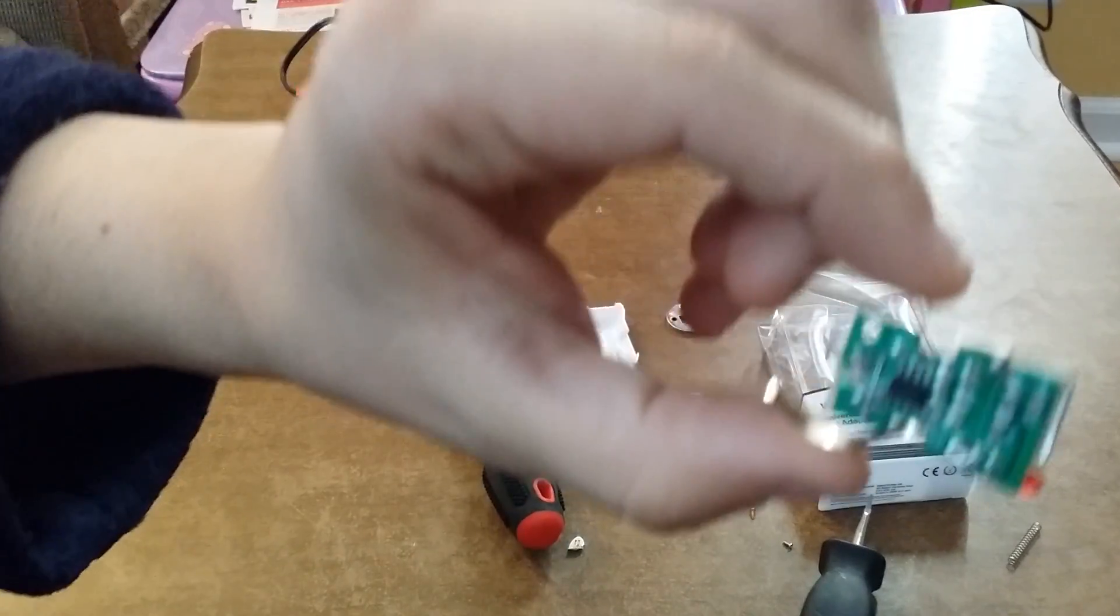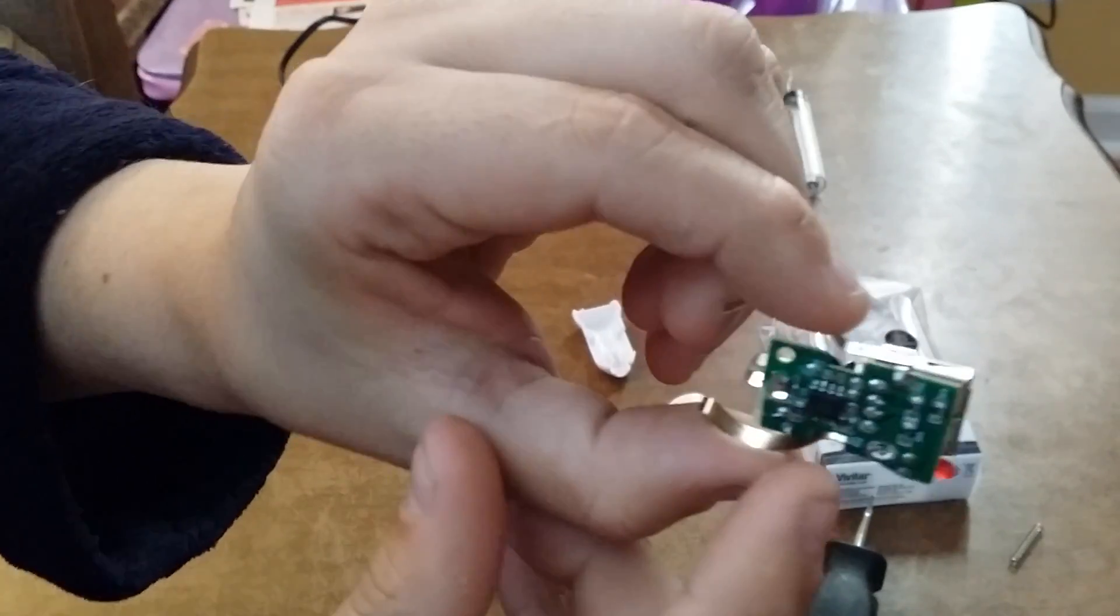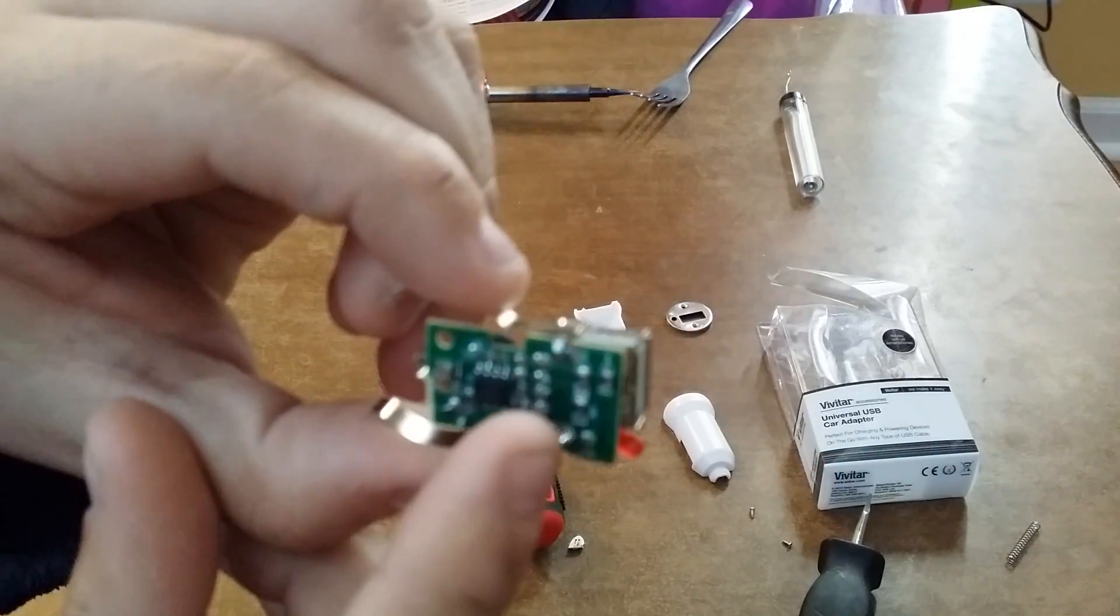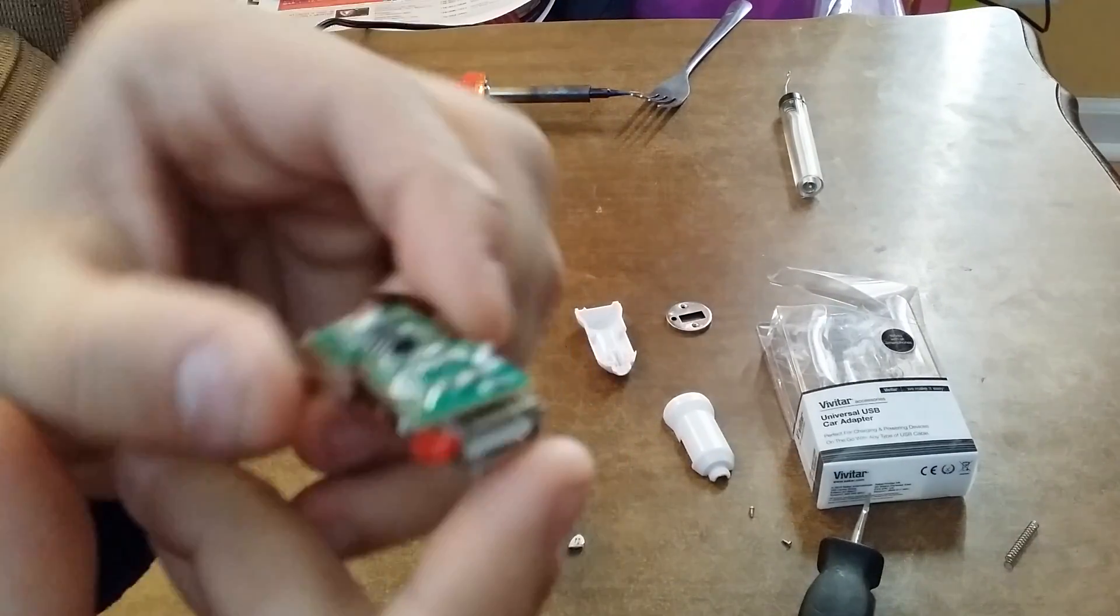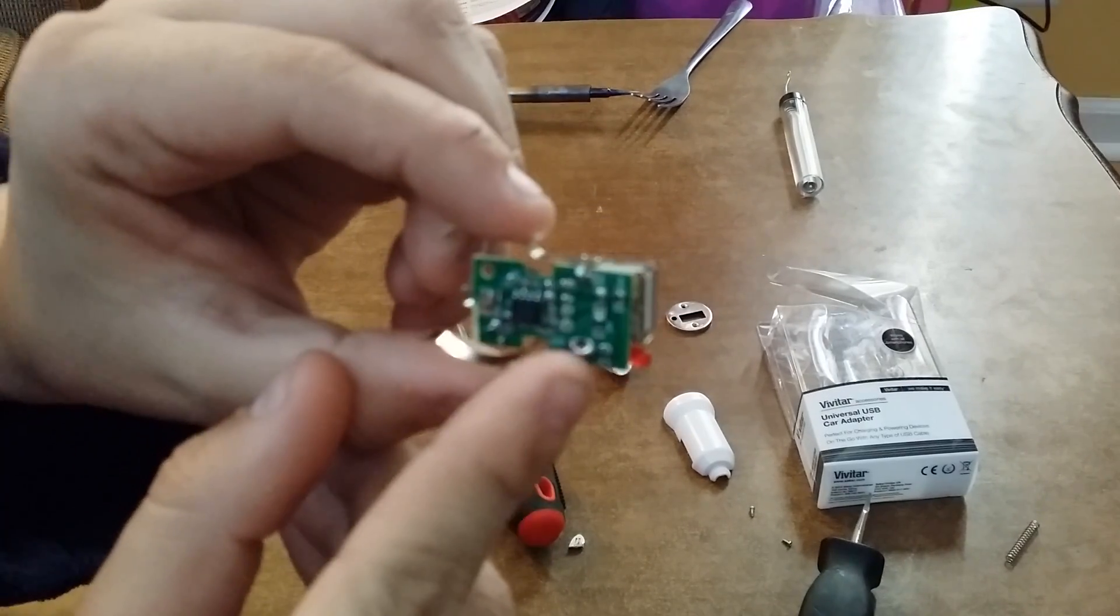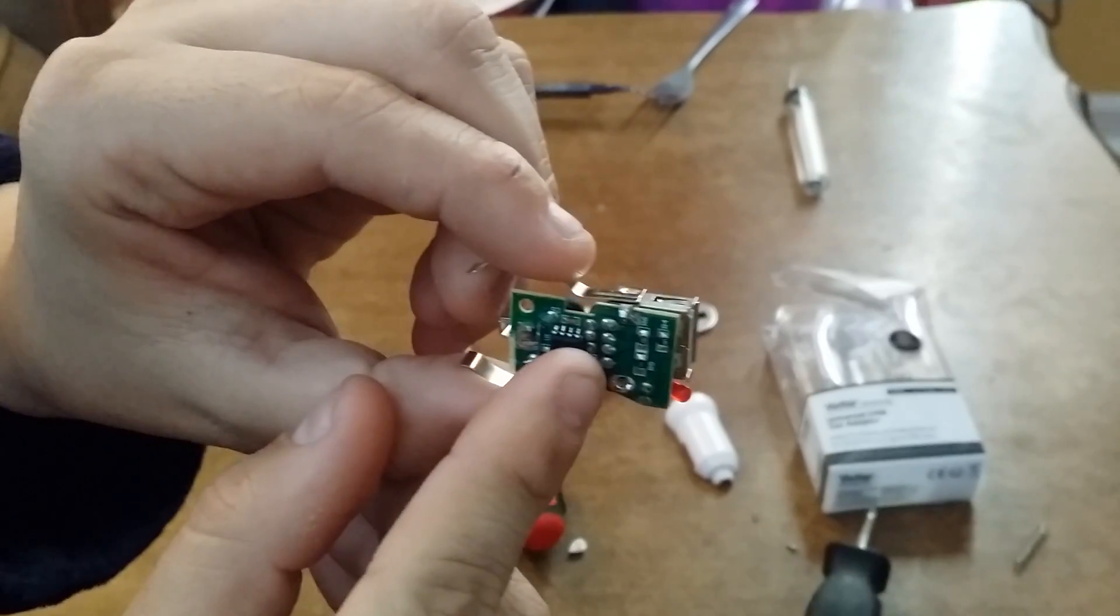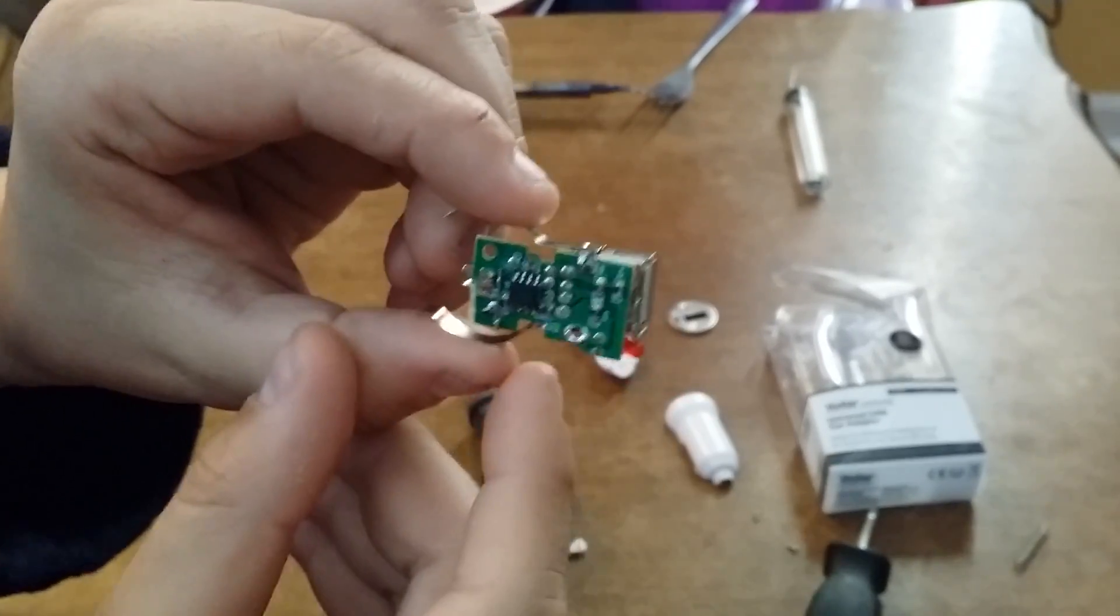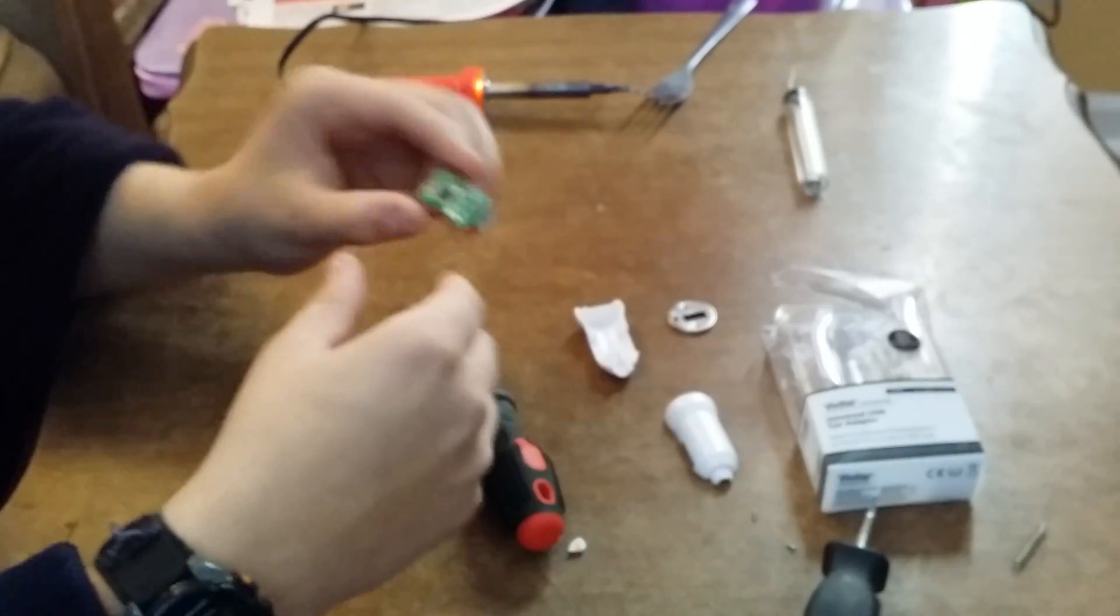So in here, what you have is these four little pins - these are for the USB. The two outer ones are the positive and negative for power, and the two inner ones are for the data. Since our phone doesn't use data when it's coming out of the wall, we're going to short that out.